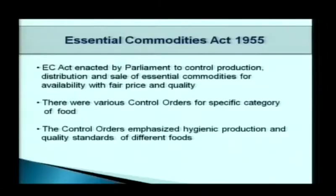There are various control orders for specific categories of food like fruits and vegetables, milk and milk products, meat and meat products, oil products, etc. The basic emphasis of these orders was to control production at the factory or industry level through various hygienic measures and quality standards for different products.